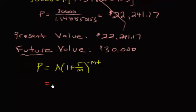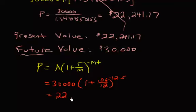So we're going to get 30,000 dollars, because that's my future value, times 1 plus 0.06 over 12 to the negative 12 times 5. And so when you plug that in your calculator, you will get 22,241 dollars, and rounding to one penny, we'll get 17 cents.